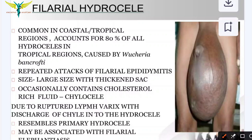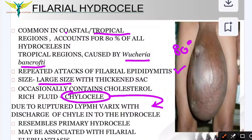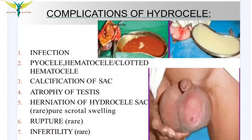Filarial hydrocele is mainly common in coastal and tropical regions, accounting for 80% of hydroceles in those areas. It is caused by the filarial worm Wuchereria bancrofti, and fluid accumulation is due to repeated attacks of filarial epididymitis. It is larger in size with a thickened sac and occasionally contains cholesterol-rich fluid called chylocele, which is due to ruptured lymphatics with discharge of chyle into the hydrocele. Chylocele resembles primary hydrocele and may be associated with filarial elephantiasis.